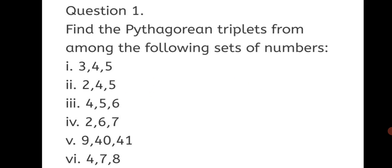Question 1: Find the Pythagorean triplets from among the following sets of numbers. Six questions are given. We will solve them one by one and check whether they form a Pythagorean triplet or not. First sum — the numbers given are 3, 4, and 5.